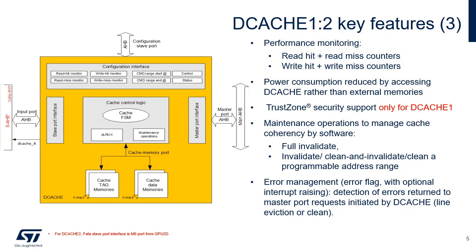DCache1 and DCache2 implement performance counters: two 32-bit hit counters, one for read and one for write transactions, and two 16-bit miss counters, one for read and one for write transactions. This performance monitoring allows analyzing and optimizing data placement in accordance with cacheability and write-back/write-through policy to achieve the most performant data traffic.